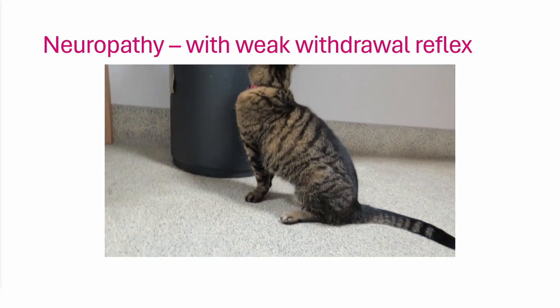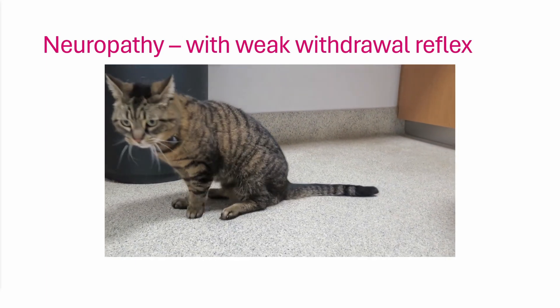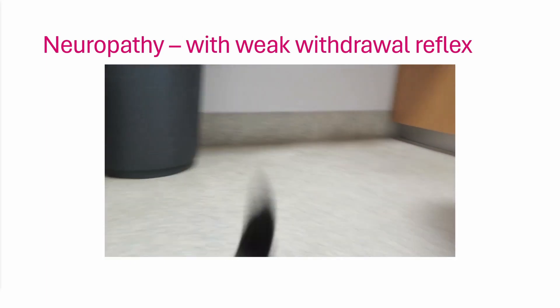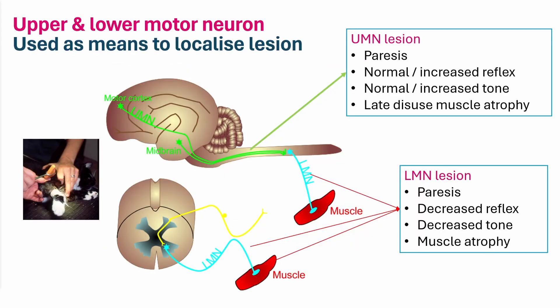Why do we use reflexes to localize to a region of the spinal cord? We use whether or not an animal has an upper or lower motor neuron lesion simply as a means to localize the lesion. People get incredibly confused by this — I remember being very confused by this as a veterinary student, and it's actually one of the reasons that inspired me to do more neurology and end up as a veterinary neurologist. I'm going to briefly explain it here.